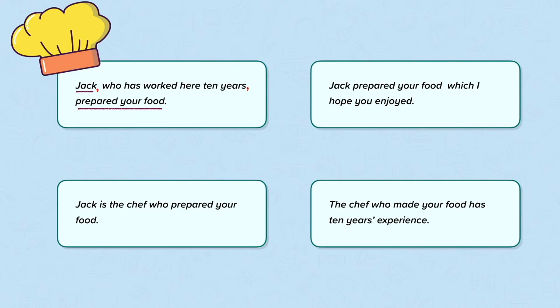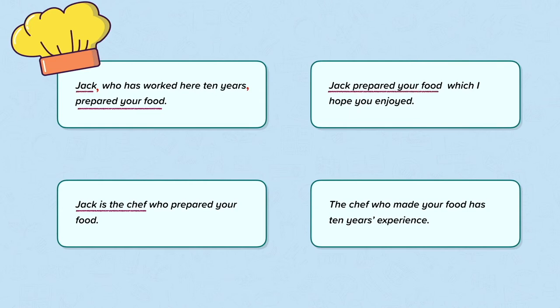In the next sentence: "Jack is the chef who prepared your food." The independent clause is "Jack is the chef." Although that makes sense by itself, it changes the meaning — it doesn't tell us what's important about Jack. So we don't need a comma to separate "Jack is the chef" from the relative clause. In the third sentence: "Jack prepared your food, which I hope you enjoyed." The independent clause comes first; however, the dependent clause begins with the relative pronoun "which," so we do need a comma here to separate it from the independent clause.